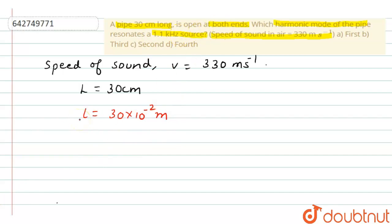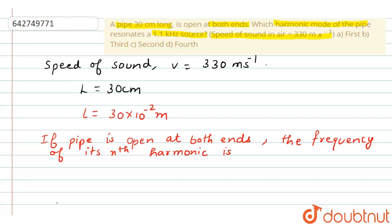As it is given in the question that the pipe is open at both ends, if the pipe is open at both ends, then the frequency of its nth harmonic is given by nu n equals n v divided by 2 L, and here n can be equals to...